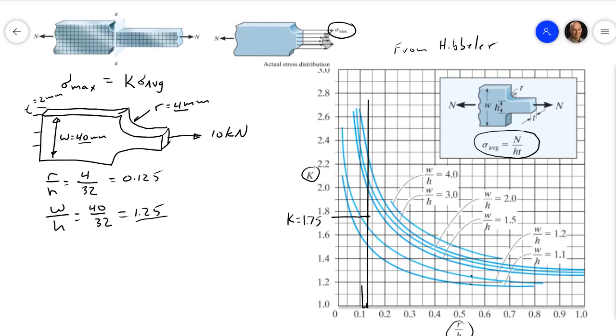And then we need to calculate sigma average, which is N over HT. So that will be 10 times 10 to the 3 newtons divided by H, which we said is 32, so 0.032 times 0.002. And that equals 156.25 times 10 to the 6 pascals, or 156 megapascals.